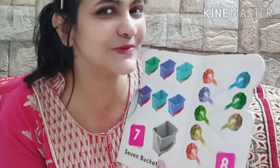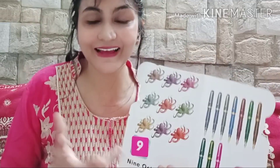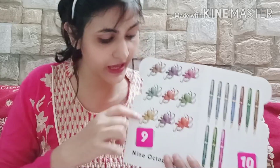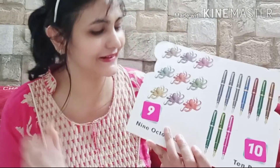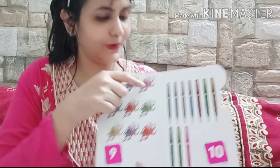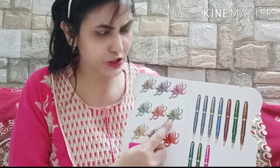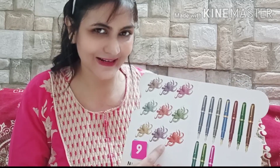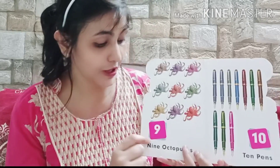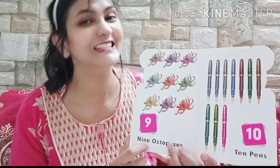What comes after 8? Let's see — number 9. It is — what is this? Octopus. Octopus in the sea. One, two, three, four, five, six, seven, eight, nine octopus. Nine. Let's see the spelling of nine: N-I-N-E. Nine.